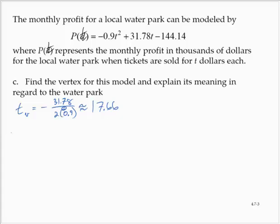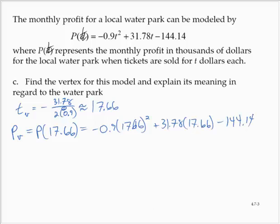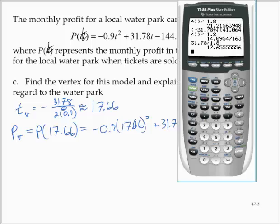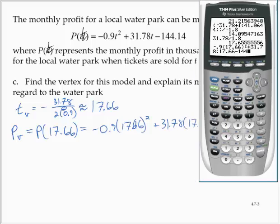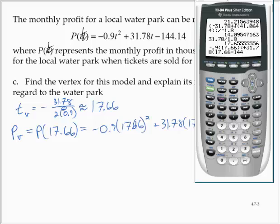And then the p-coordinate of the vertex would be P(17.66). So that would be -0.9(17.66)² + 31.78(17.66) - 144.14.